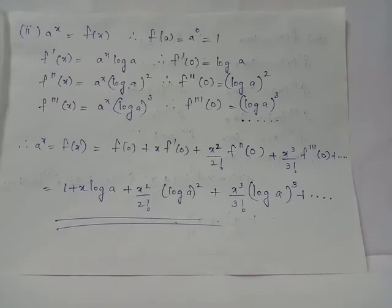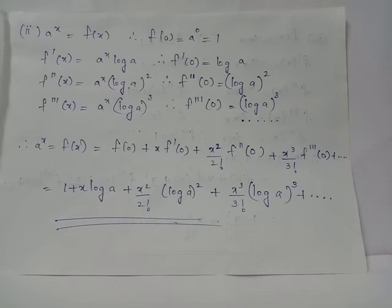The third derivative f'''(x) is the derivative of f''(x), where (log a)² is a constant and the derivative of a^x is a^x · log(a). Hence f'''(x) = a^x · (log a)³, and f'''(0) = a^0 · (log a)³ = (log a)³.